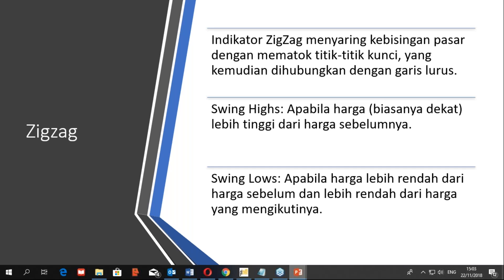Indikator zigzag dapat menggunakan kedua persentase atau titik dalam konstruksinya. Untuk membangun indikator zigzag harus ada persentase atau titik di antara titik ayunan harga tinggi atau high dan ayunan harga rendah atau low sebelum penarikan atau pembentukan garis. Indikator zigzag menyaring kebisingan pasar dengan mematok titik-titik kunci yang kemudian dihubungkan dengan garis lurus. Swing high yaitu apabila harga lebih tinggi dari harga sebelumnya, sedangkan swing low apabila harga lebih rendah dari harga sebelumnya dan lebih rendah dari harga yang mengikutinya.